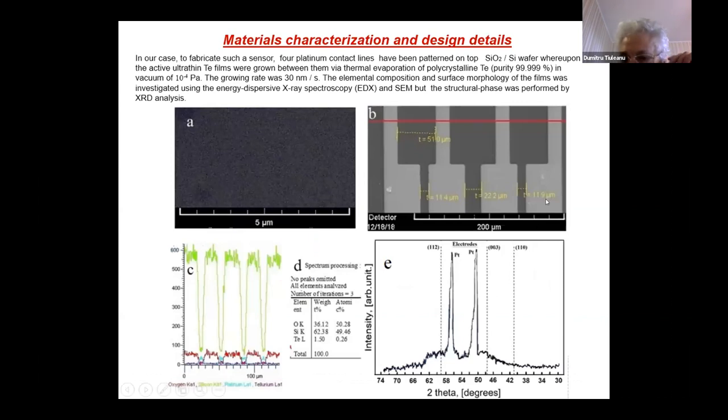Here you can see the materials. In our case, to fabricate this sensor, we have grown this on platinum on the silicon substrate buffer, four platinum electrodes. This is the same micrograph of tellurium layer. You can see that it is really in an amorphous state, confirmed also by XRD pattern.